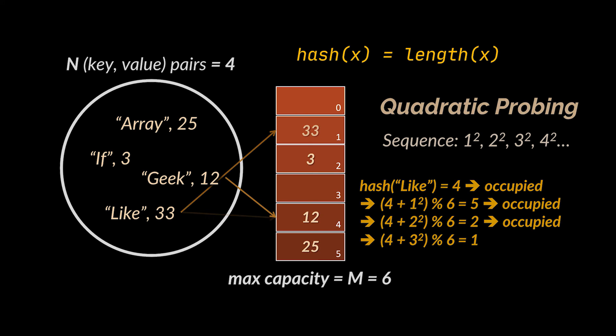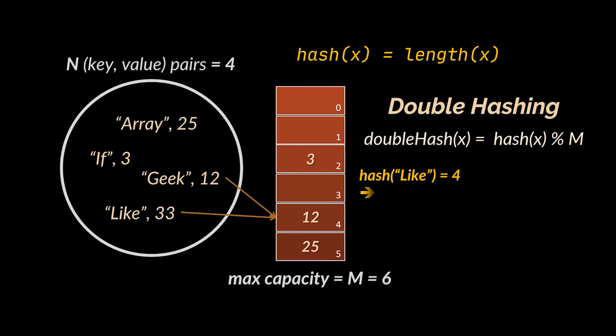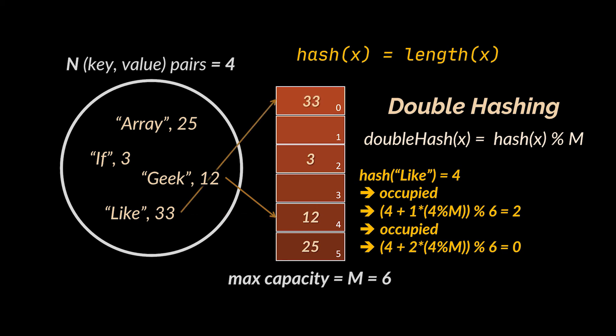The last probe sequence we are going to cover, and basically the most generic one, is double hashing. Here we hash again the result using another hash function to find another empty slot. Every other case is a specific case of the double hashing, because after all what we are doing is passing the results to another function, whether linear, quadratic, or any other kind of function, and try to come up with a new index for the key that collided with the one we already stored in our array.